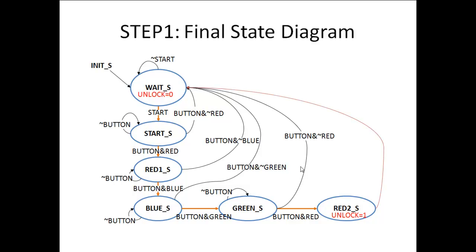This is the same bubble diagram drawn in a different way. After a green button press, if a red button is pressed the system goes to the red two state and the unlock pulse is issued. After the unlock is issued, the system goes back to the wait state, as represented by the red arrow at the end.